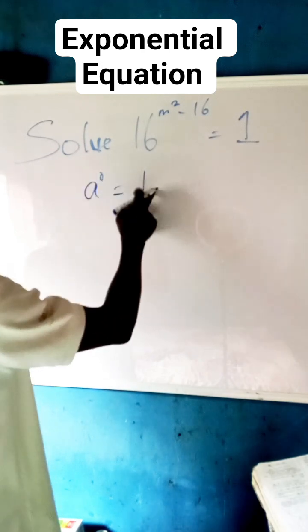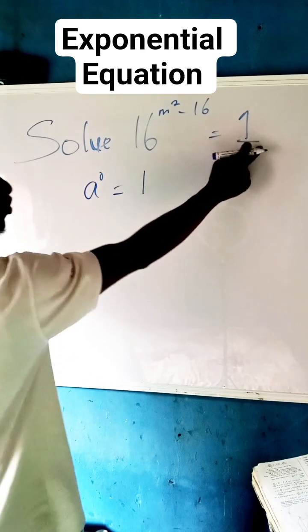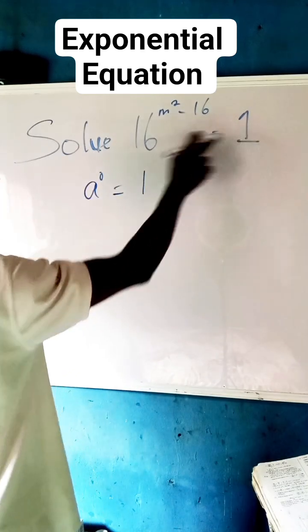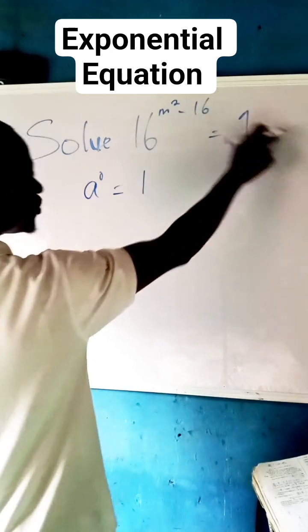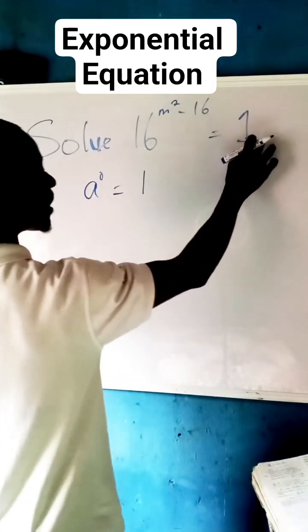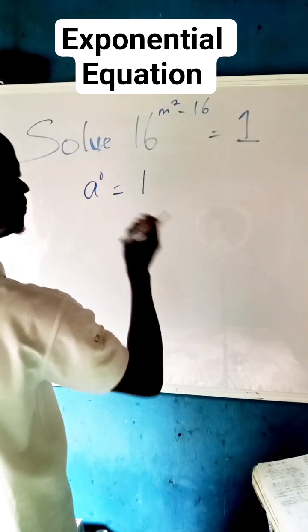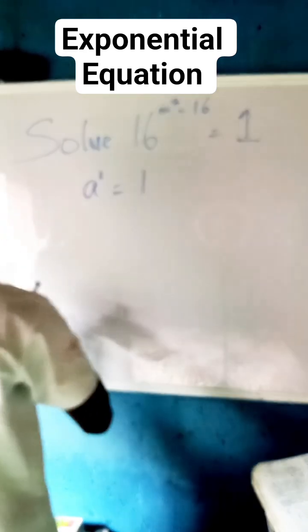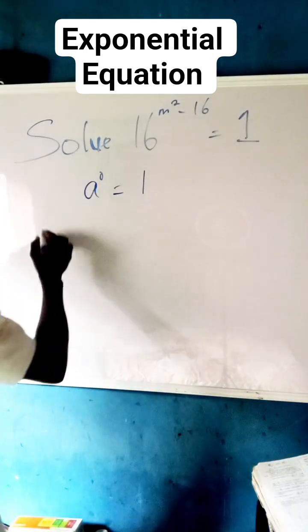As long as it's raised to the power of zero, it is one. So we can write this 1 to be any number that has the power of zero. And because we have a 16 here, instead of writing 1, we can write 16 raised to the power zero so that we now have 16 to the power of m squared minus 16.